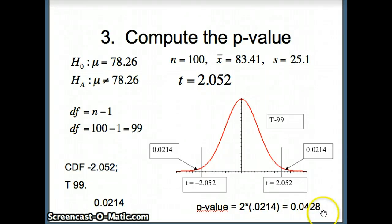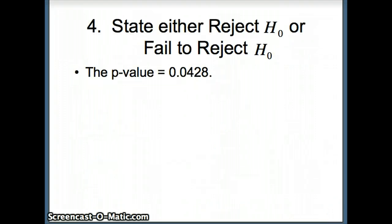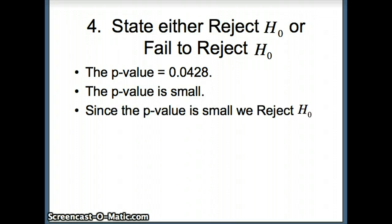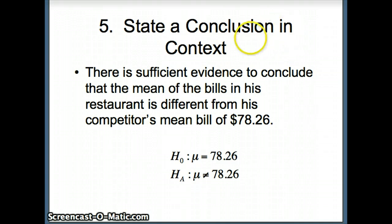Is this a large or small p-value? Normally we compare to 0.05, so relative to 0.05 that's small. Since the p-value is small, we reject H naught. What does that mean in context? There is sufficient evidence to conclude that the mean of the bills in his restaurant is indeed different from his competitor's mean bill of $78.26.